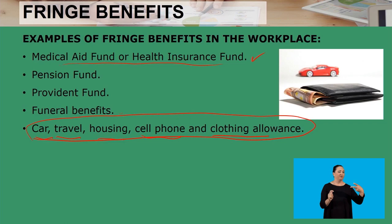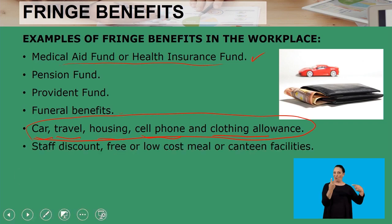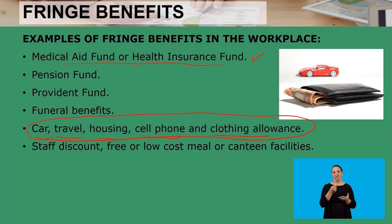Further examples include staff discounts, free or low-cost meals, or canteen facilities. In your work premises you may be allowed free coffee or bread with butter during lunch. These are examples of fringe benefits in the workplace. They are not compulsory benefits, but they are over and above your salary or wages.